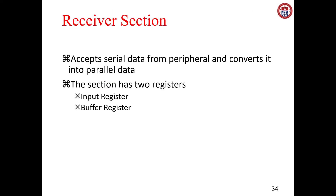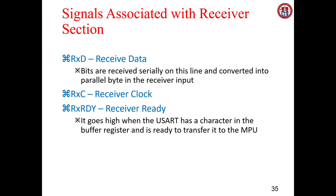The receiver section accepts serial data from the peripheral device and converts it into parallel data. It also contains two registers: an input register and a buffer register. For receiving data the RXD signal is used, where bits are received serially and converted into parallel by the receiver input. The receiver section also has a receiver clock (RX CLK), similar to the transmitter clock.